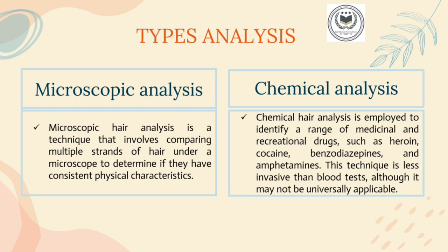Now let's learn about types of analysis. Microscopic analysis is a technique that involves comparing multiple strands of hair under a microscope to determine if they have consistent physical characteristics. It was recognized as a forensic science in the 1950s. Researchers typically analyze more than a dozen attributes such as pigment distribution and scale patterns. This approach has been used in criminal investigations.